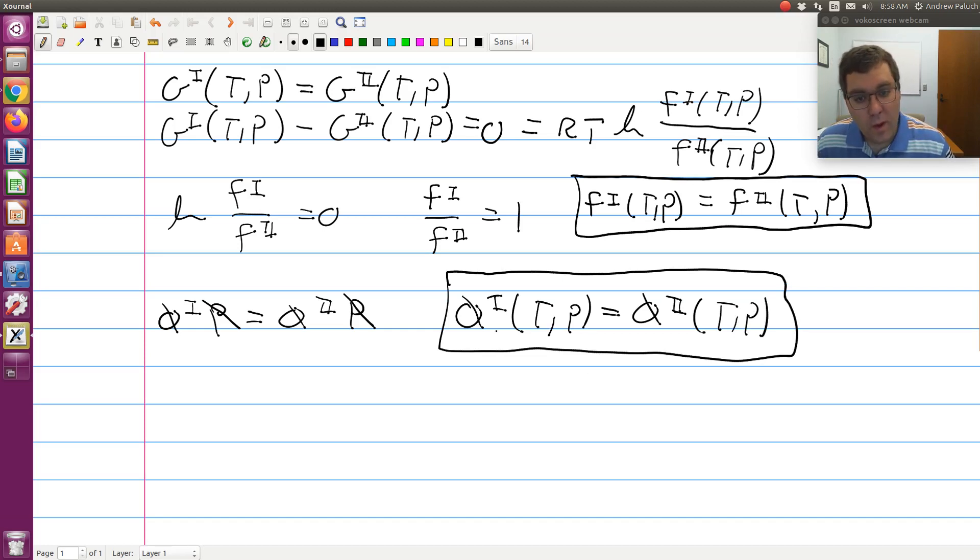And why is this useful? Well, we showed that fugacity coefficient is related to my residual Gibbs free energy. Namely that, GR is equal to RT log phi. And GR is going to be equal to HR minus TSR. And so why that's useful is we've shown already now that we can use our cubic equations of state to readily calculate HR and SR, and hence GR. So if I've taken my phase equilibrium criteria now and reduced it to inequality of fugacity coefficients, which I can relate directly to GR, now I know I can use a cubic equation of state to calculate GR.